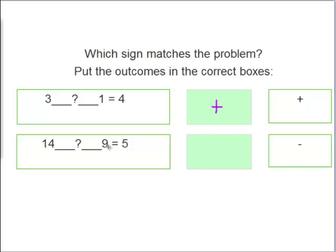14 plus 9. What is 14 plus 9? Well, you know it is much bigger than 5, right? 4 plus 9 is 13. Carry the 1. 2. 23. So we know it must be 14 minus 9 equals 5.